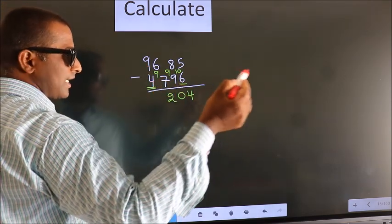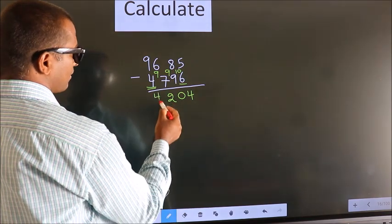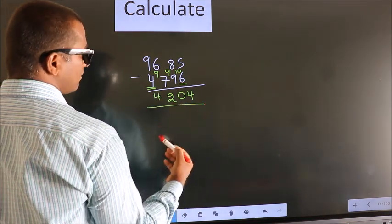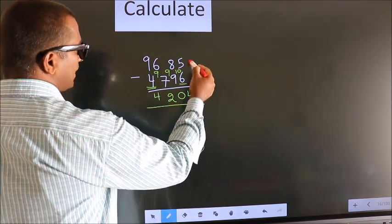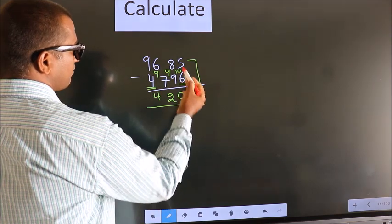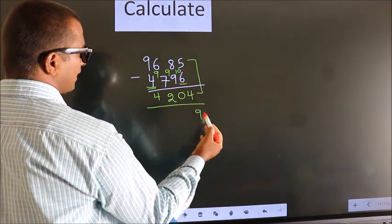Decrease by 1 more, we get 4. Now add these two. 5 plus 4 equals 9.